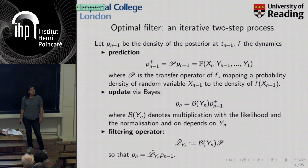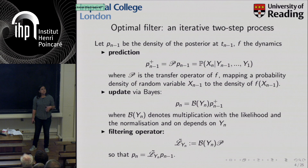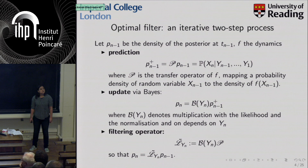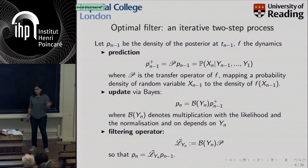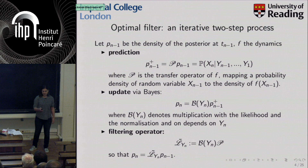We can formulate optimal filtering in two familiar steps: the prediction and the update. If we have the density for the posterior at time T_{N-1}, the prediction density is the density under the dynamics F, given by the transfer operator or Frobenius-Perron operator — this is the conditional probability of X_N given all observations up to T_{N-1}. The update incorporates the latest observation via multiplication by the likelihood and normalization. Combining these gives a single filtering operator taking density P_{N-1} to density P_N at time T_N.